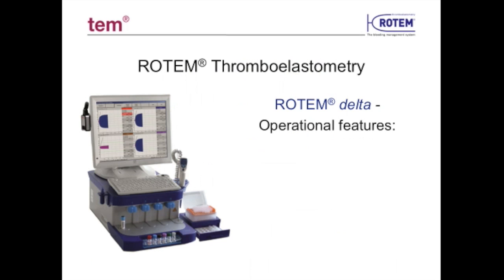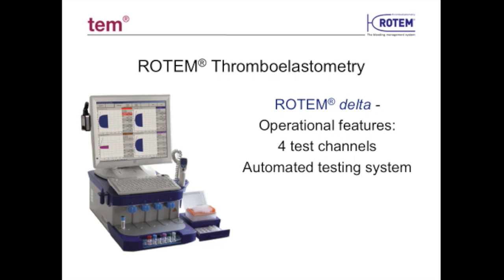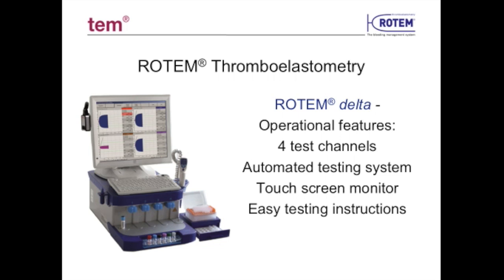The technology used in Rotem testing is done on a precision instrument called the Rotem Delta. This Delta allows for testing of four samples at a time, is relatively automated, has simple and intuitive touchscreen operation, provides easy-to-understand graphic and written instructions with each test, allows for weekly liquid quality control, and has a convenient barcode scanner. The Rotem Delta is a self-contained system that is easy to operate and maintain regulatory compliance for 24-7 readiness.